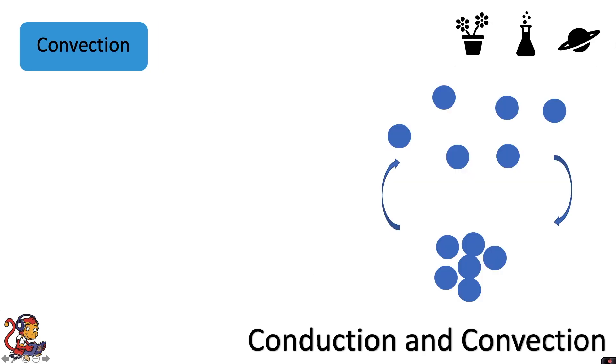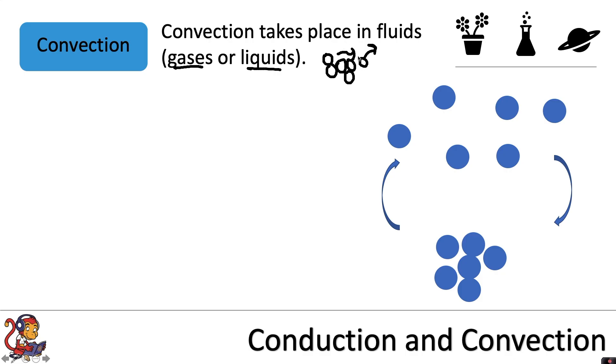The second method of transferring energy using particles is convection. Convection takes place in fluids, so gases or liquids, because the particles are free to move. In gases they are far apart and can move randomly in all directions. And in liquids the particles are closer together but are still able to move and flow over each other.